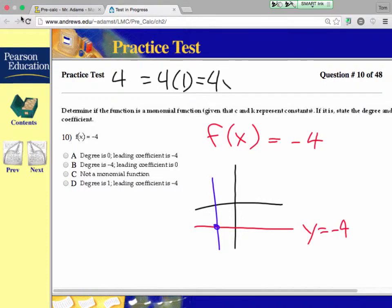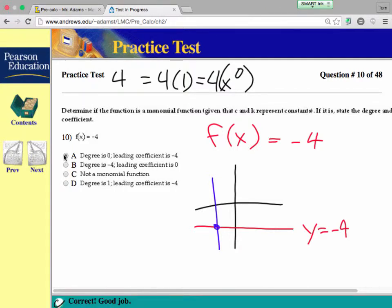And another way to think of that is x to the 0, because anything raised to the 0 is 1, so it's a 0 degree. So the degree is 0 with a leading coefficient of negative 4. Is that right? Yeah, good. Any questions?